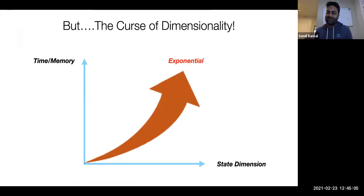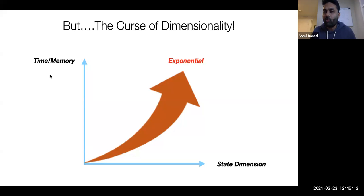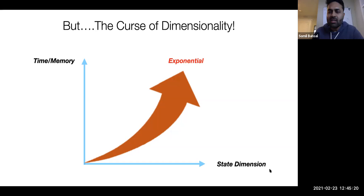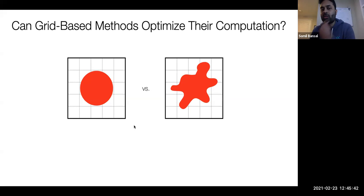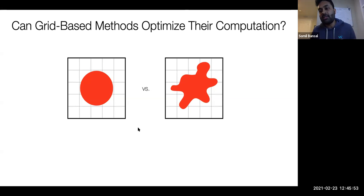The picture is less rosy because Hamilton-Jacobi Reachability suffers from the curse of dimensionality. The time and memory requirements to compute the backward reachable tube grow exponentially as the number of states increases. One reason is that level-set methods compute backward reachable tubes over a grid in state space — as the number of states increases, the number of grid points increases, and hence computation increases exponentially.